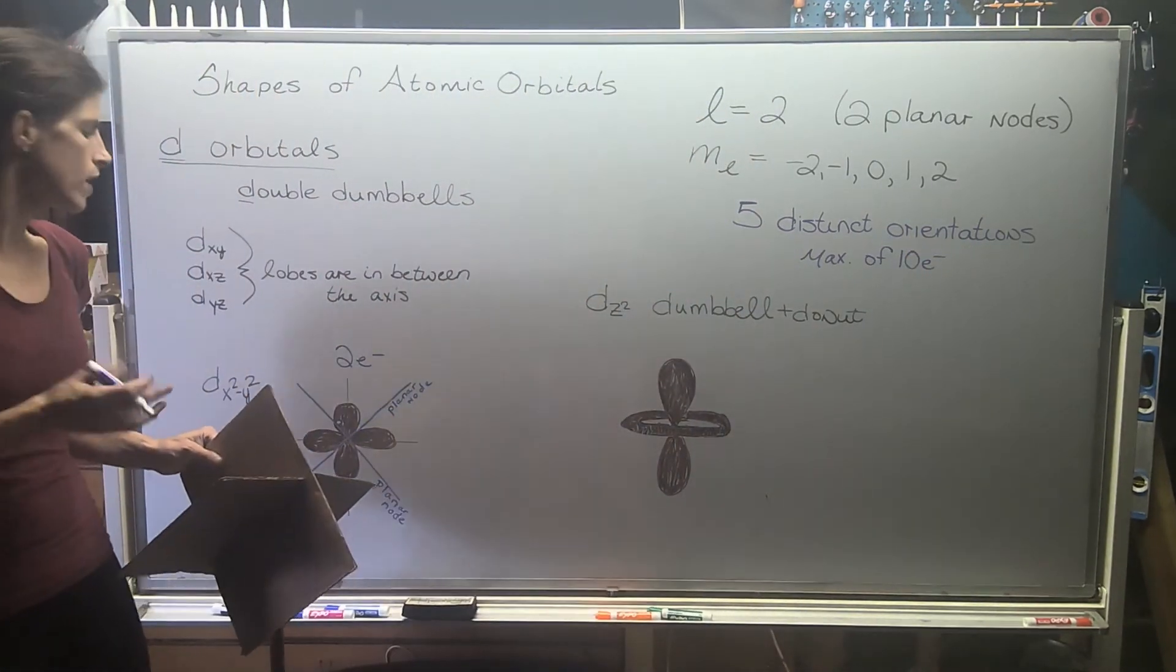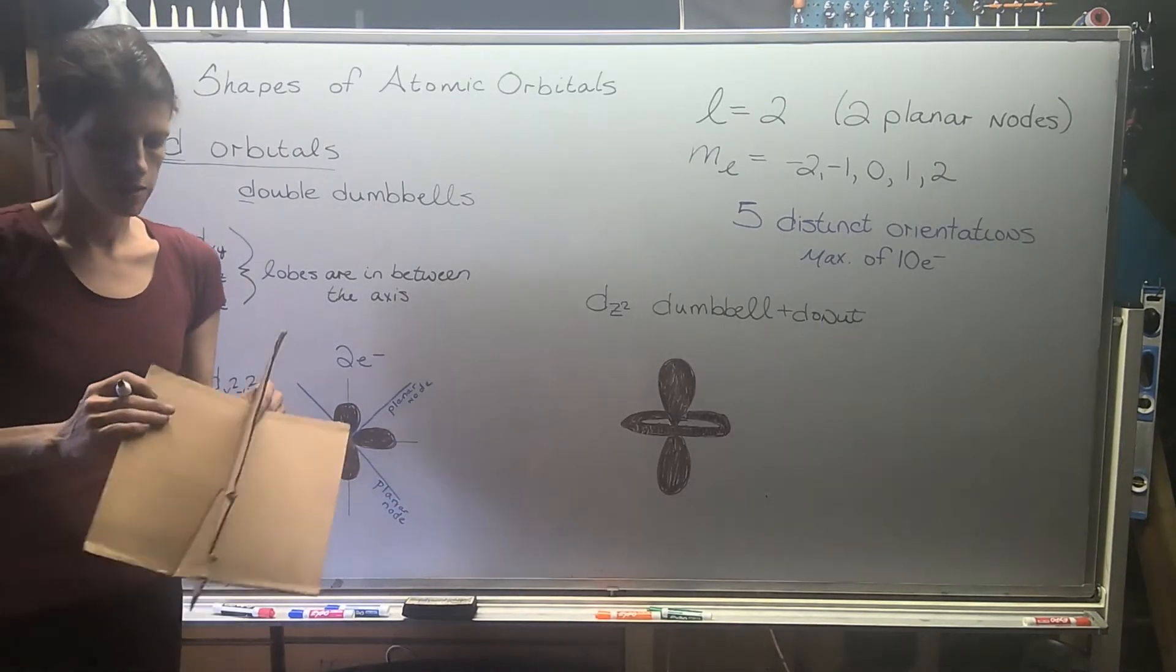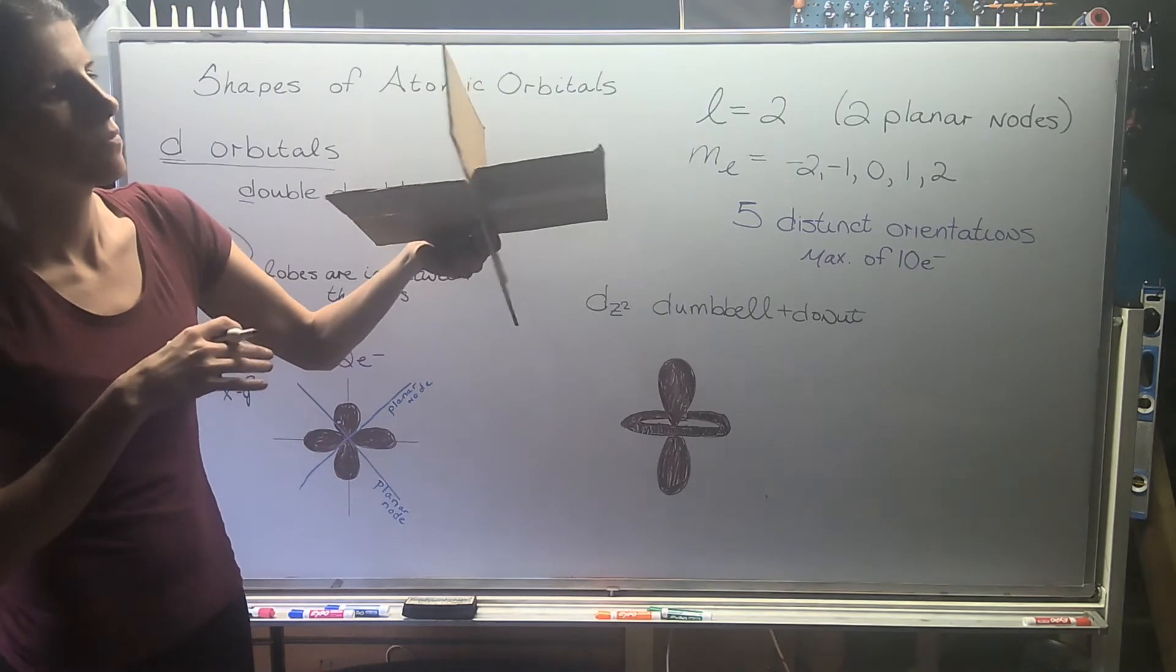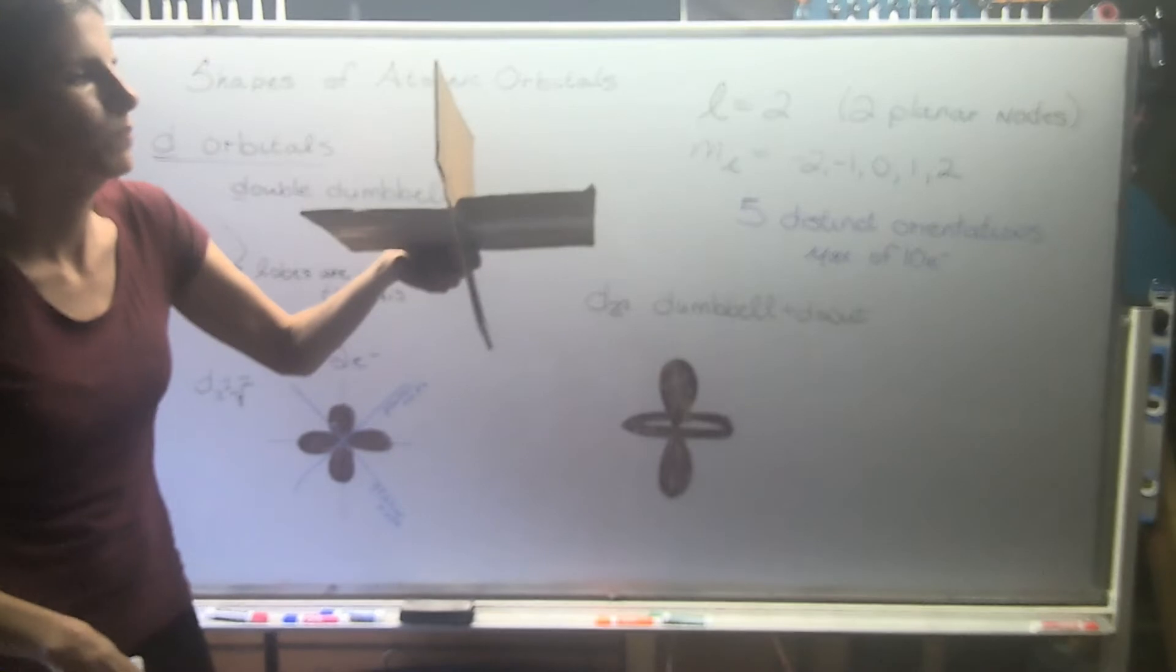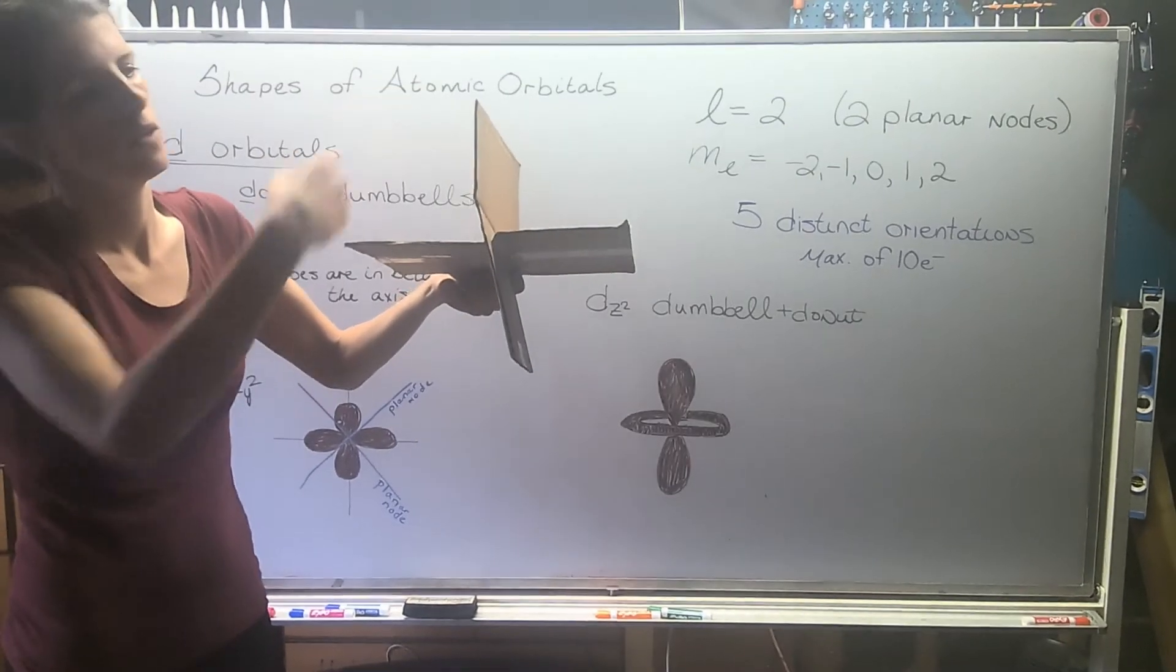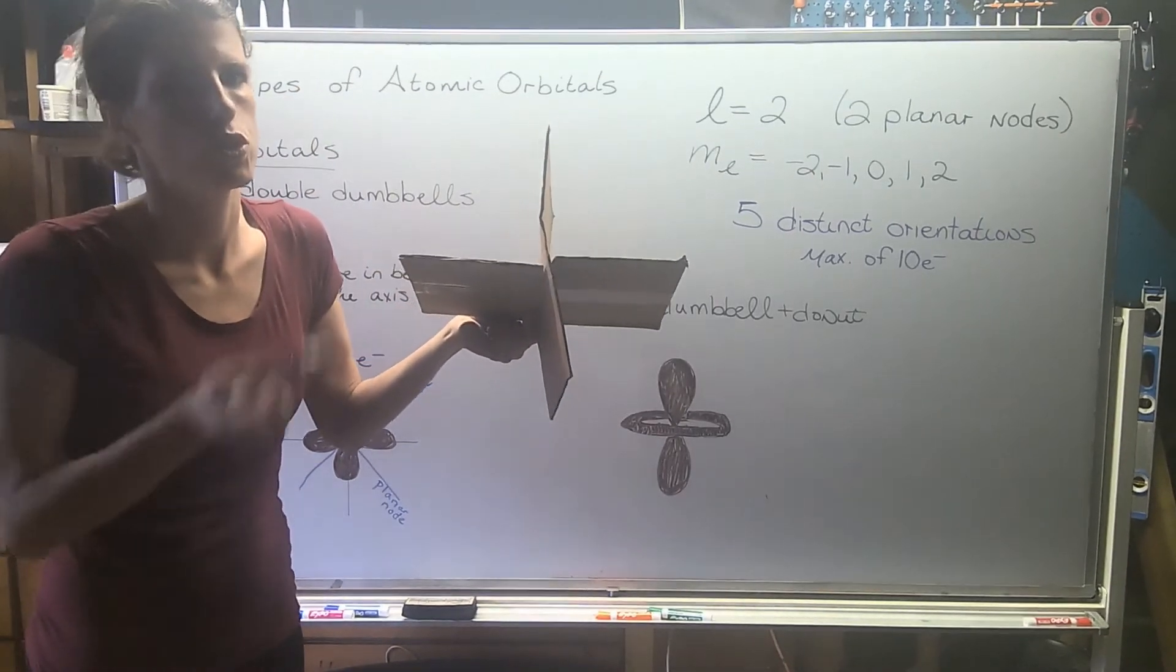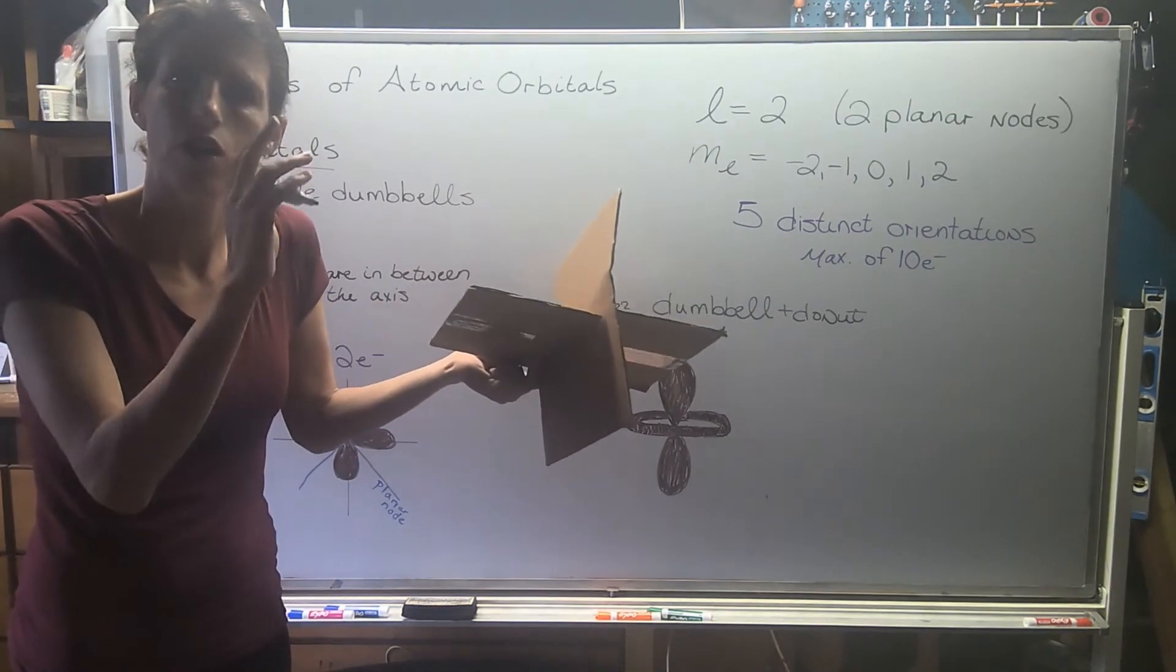One of the interesting questions that comes up here, something for you to contemplate as I'm talking, is if the planar nodes on our d orbitals look something like this, and we have our lobes in between, I ran out of balloons, I don't have enough, how do electrons go from one lobe to the other? Remember, because they have pretty much equal probability of being located in any of the four lobes, so how are they skipping those planar nodes and getting to the other side?